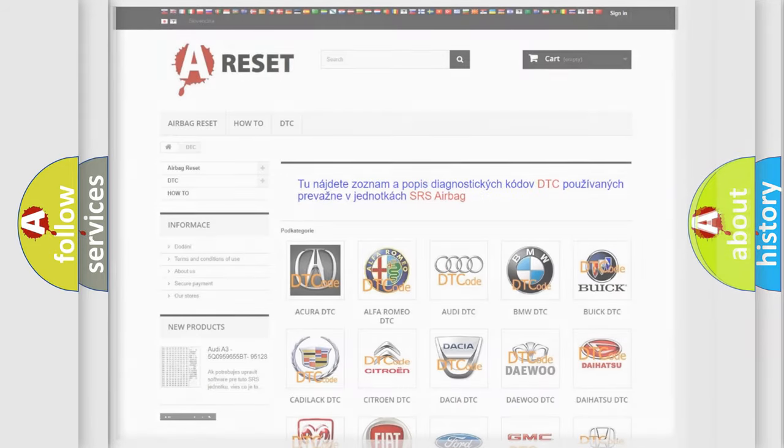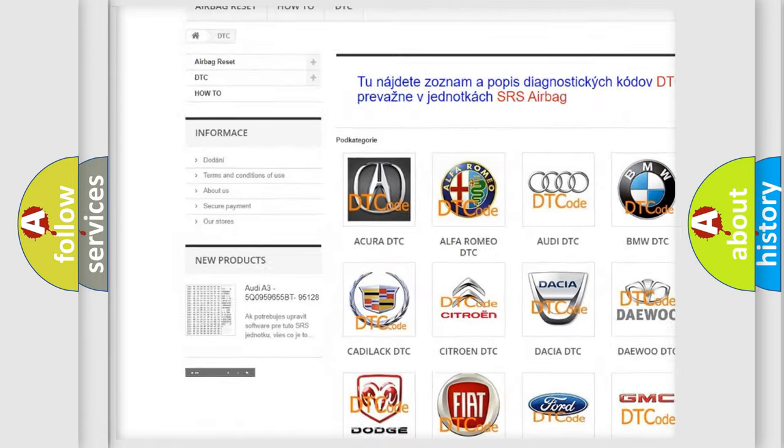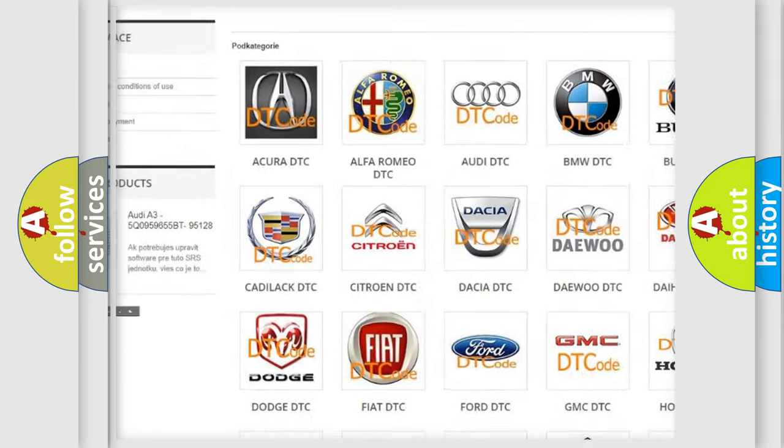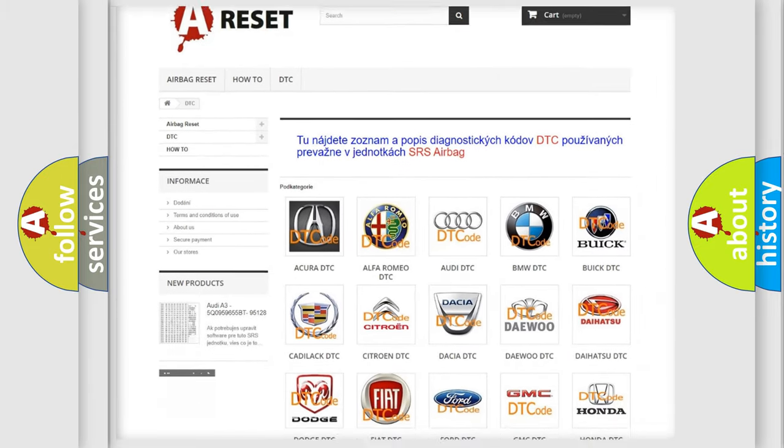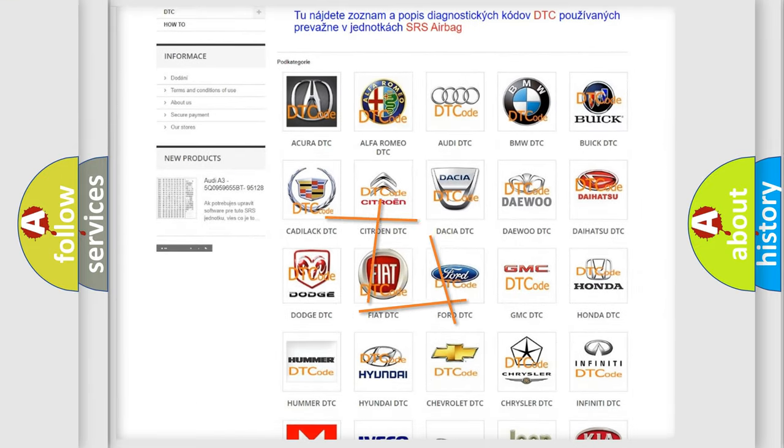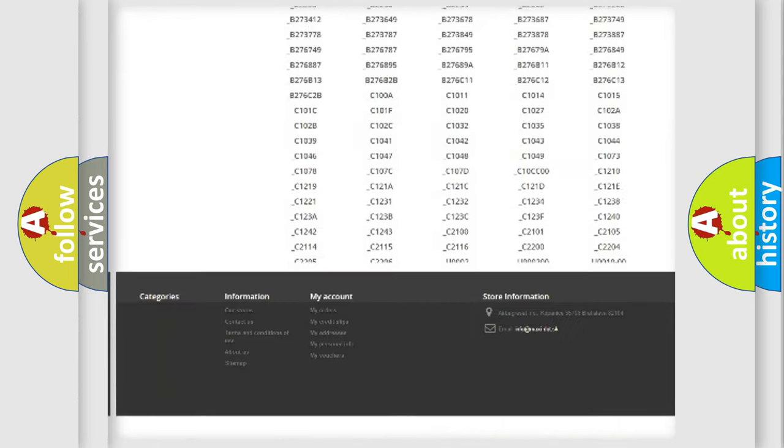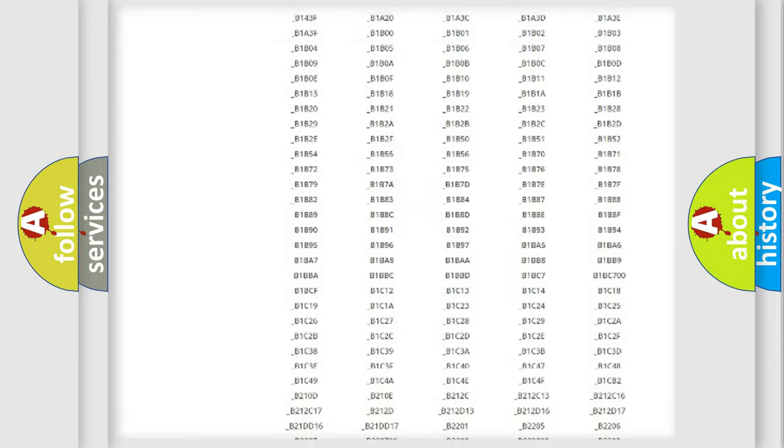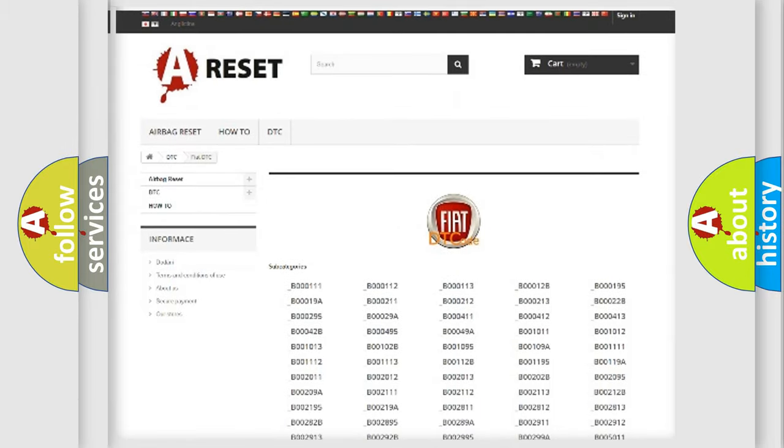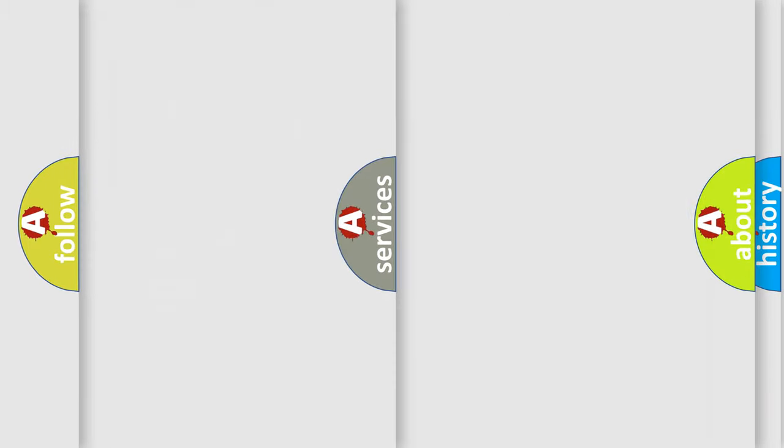Our website airbagreset.sk produces useful videos for you. You do not have to go through the OBD2 protocol anymore to know how to troubleshoot any car breakdown. You will find all the diagnostic codes that can be diagnosed in Fiat vehicles, and also many other useful things.